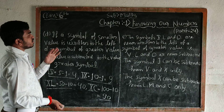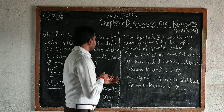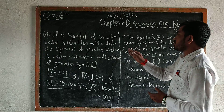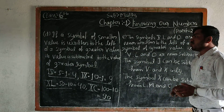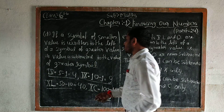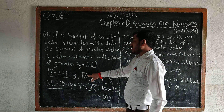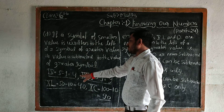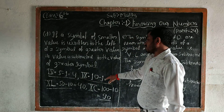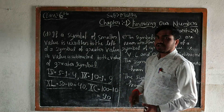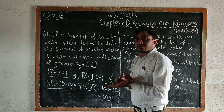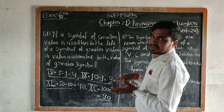If the symbol of smaller value is written to the left of the symbol of the greatest value, the value is subtracted from the greatest symbol. Here, 10 is greater, so we subtract 1 — that means 10 minus 1. When we write numbers on the left side, the numbers are subtracted.